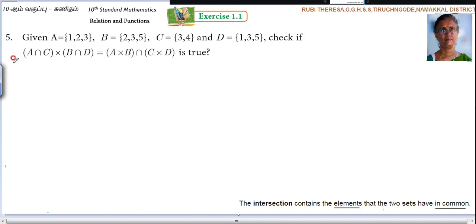So first LHS let us take. What you have to find out? A intersection C. Even though I am teaching, you can answer me along with me. So A intersection C. What is A? 1, 2, 3. Intersection C. Many students, they are writing B. You read the problem carefully. They have given C. So you have to write 3, 4. So what is common here? 3 is common. So what is the answer? 3 is the answer.